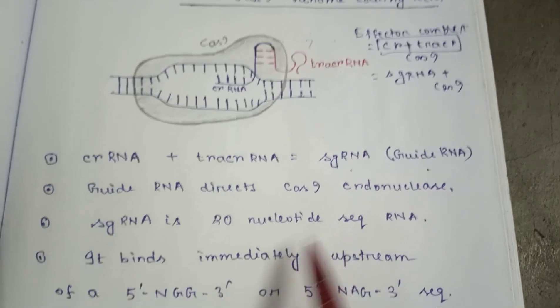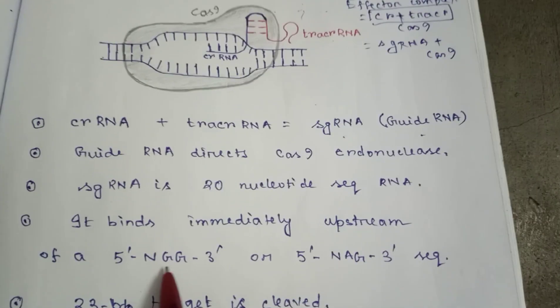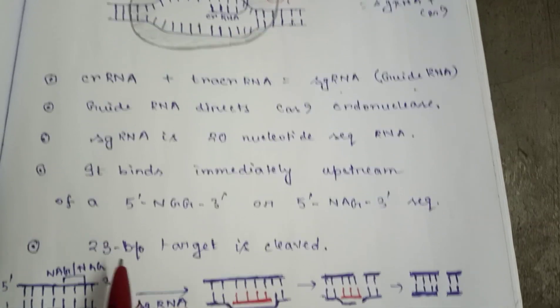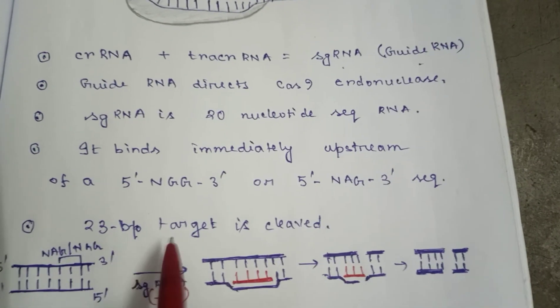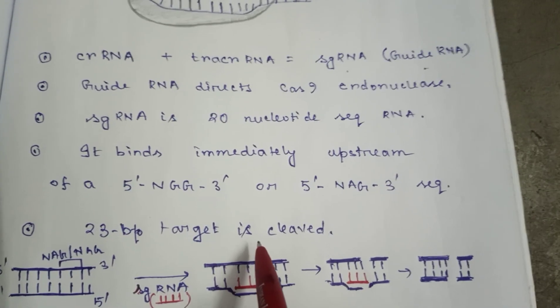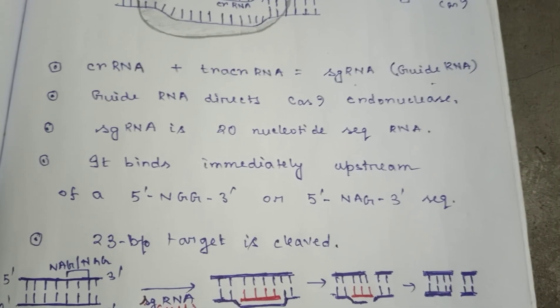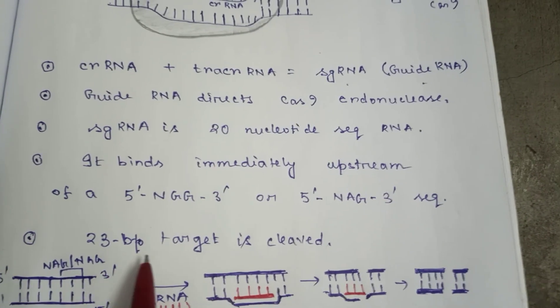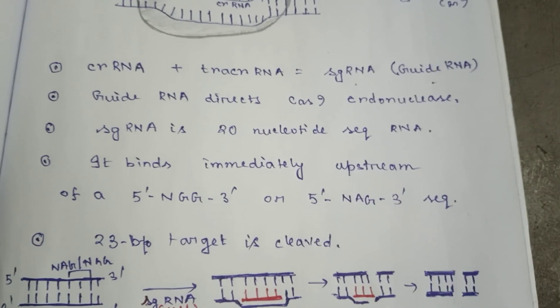So sgRNA is itself a 20 nucleotide sequence, and then it comes three more NGG or NAG. After the cleavage, what will you get? A 23 base pair target will be cleaved.